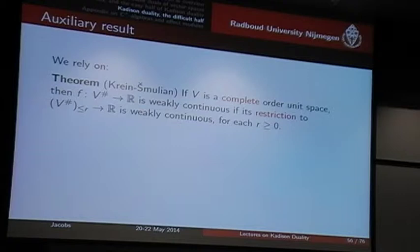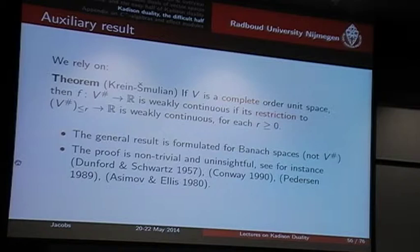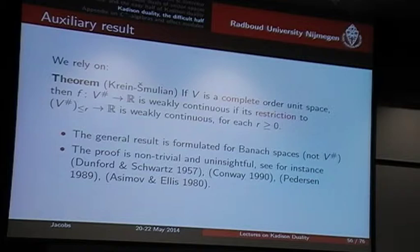The general result of the Krein-Smulian theorem is not formulated for such a V-sharp, but for Banach spaces — complete normed spaces — but I'll just formulate it the way I need it here. The proof is non-trivial but not very insightful. It's really fiddling with the details and not very conceptual. It can be found in several places in the functional analysis literature in slightly different formulations.